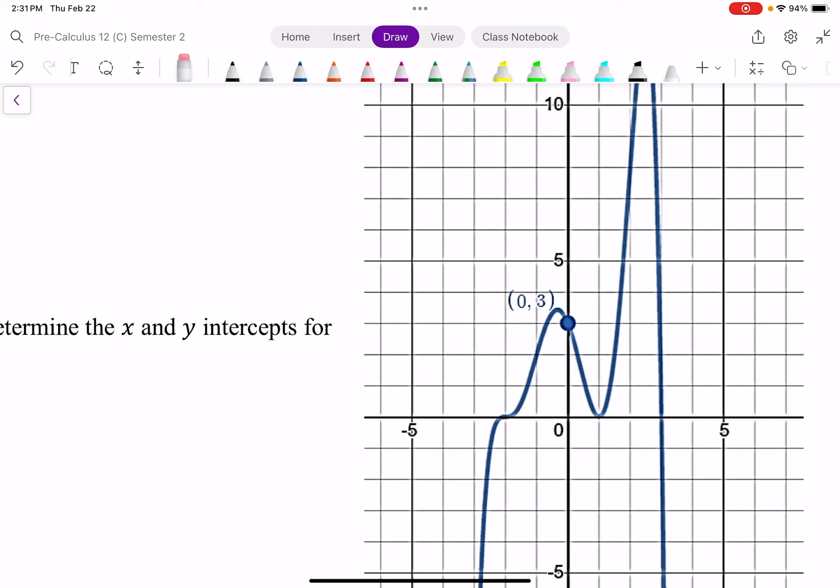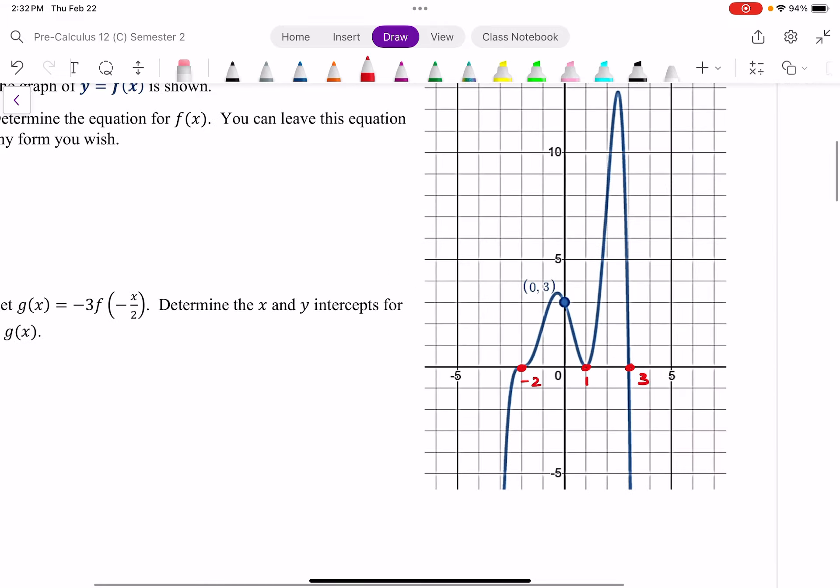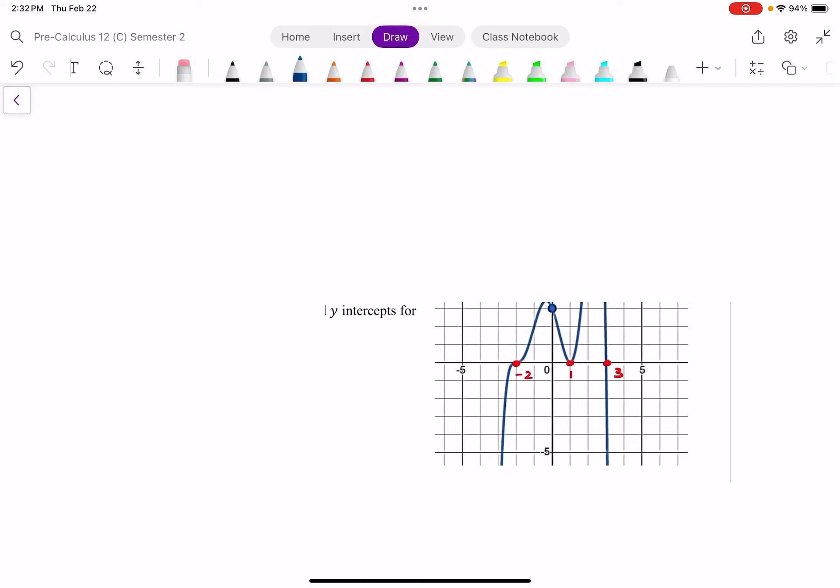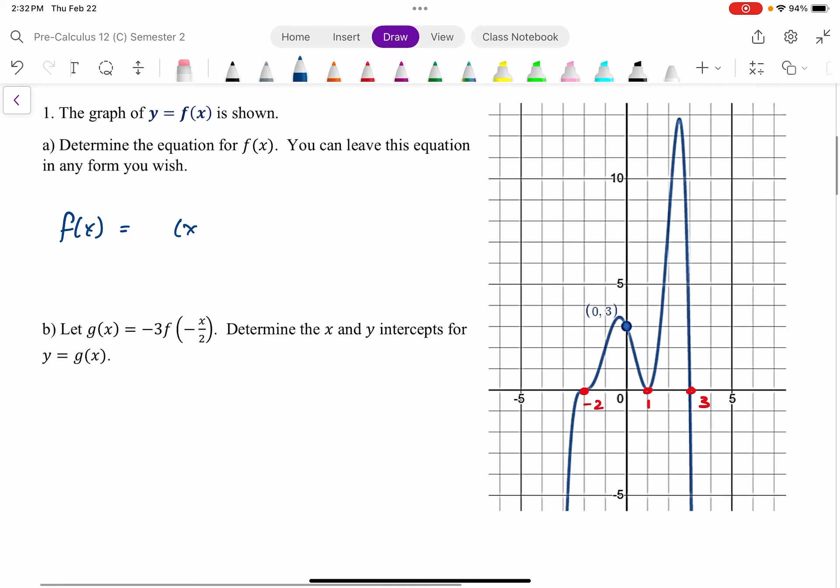I want to find the equation of this polynomial function. I can see there's an x-intercept at negative 2, an x-intercept at positive 1, and an x-intercept of 3. So I know my equation must have factors of x plus 2, x minus 1, and x minus 3.